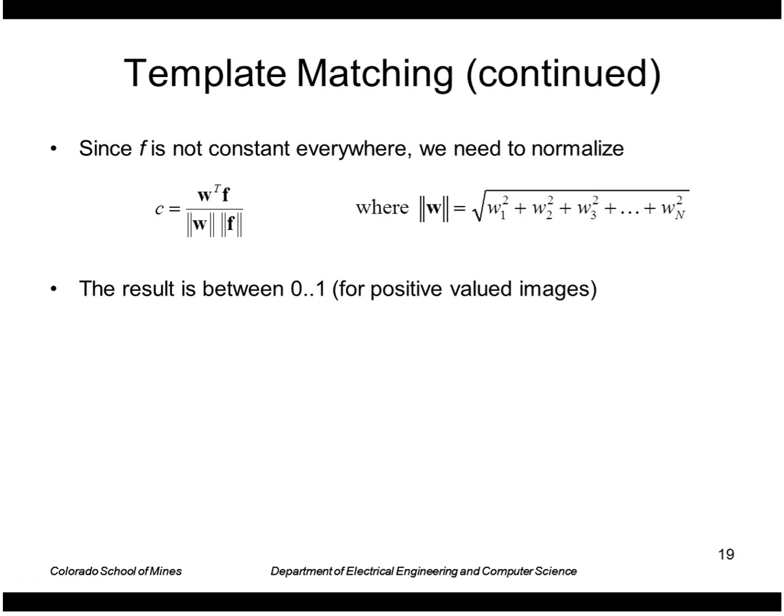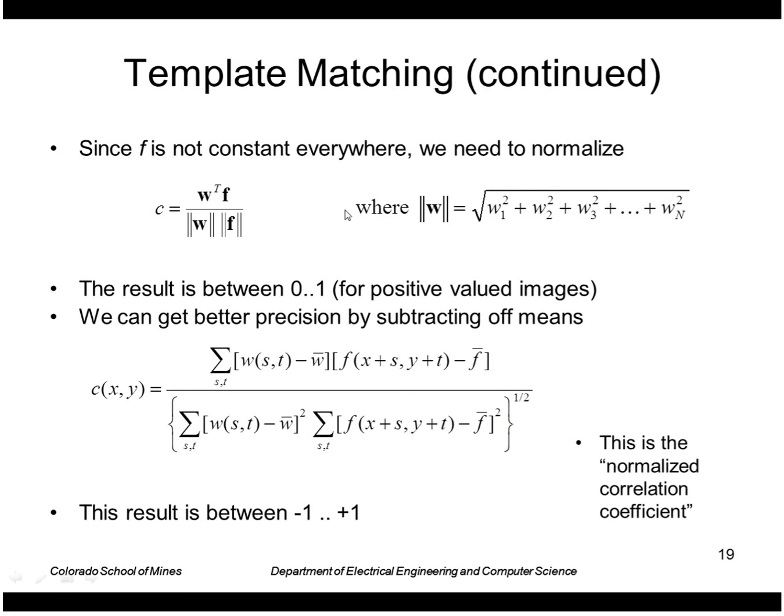This result then is a maximum of one if the two vectors are perfectly aligned. If these are positive valued images then the result is between zero and one. But we want to get better precision so we'll subtract off the mean of the mask and the mean of the image. Then the result will be between minus one and plus one. This expression is called the normalized correlation coefficient. If the result is plus one the mask perfectly matches the image. If the result is negative one it's actually perfectly opposite to the image.